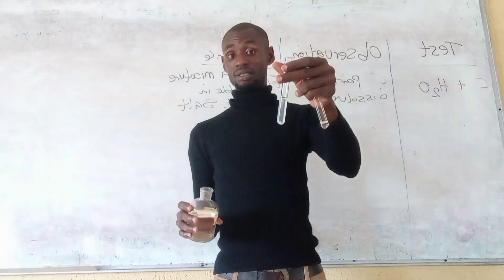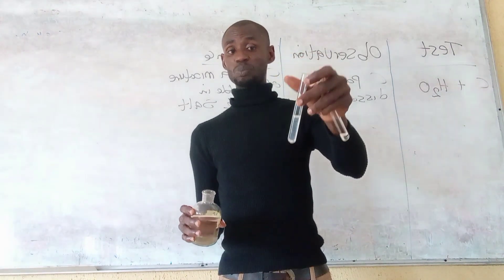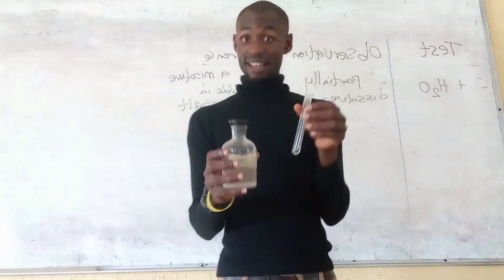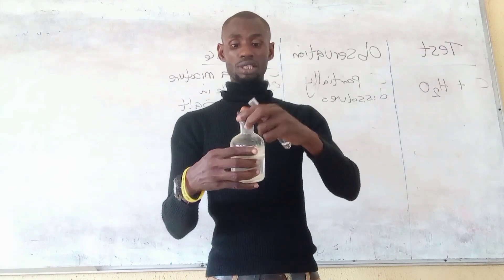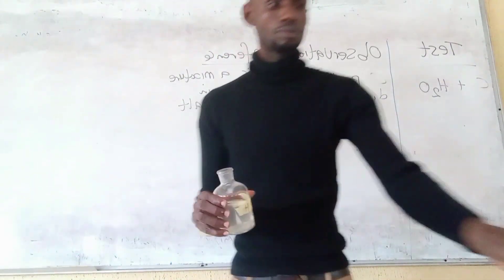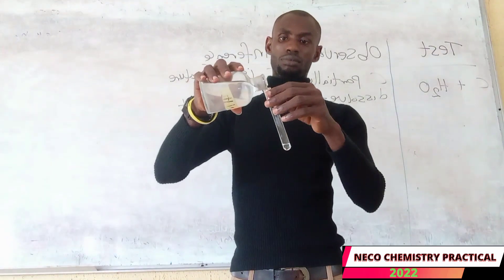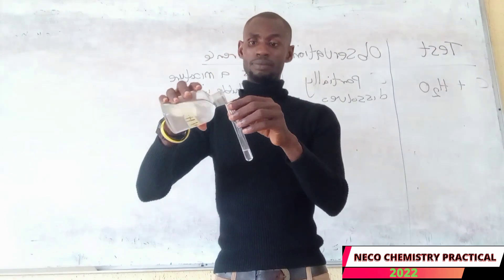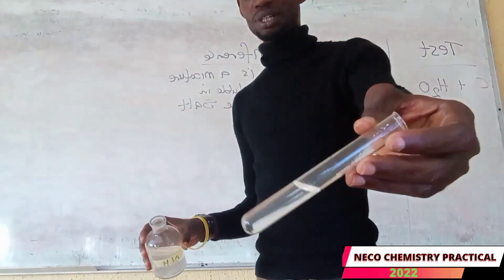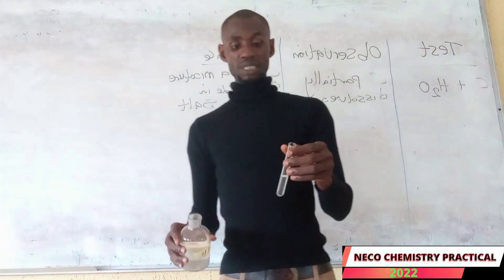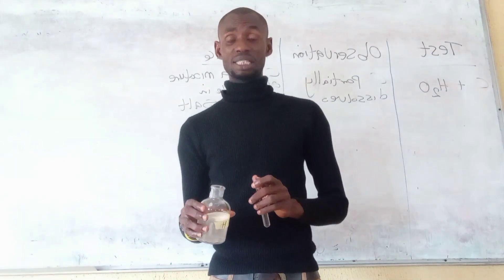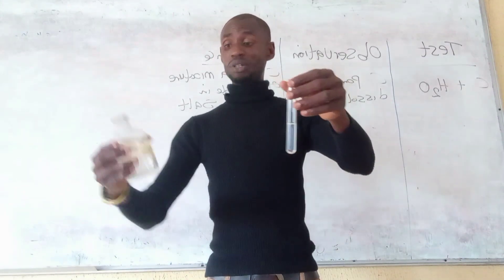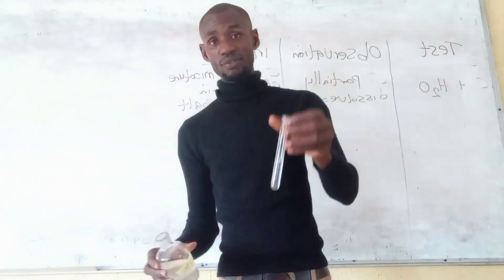A white gelatinous precipitate at the observation stage indicates two suspected ions — supply them in the comment box. To the other portion of the residue I am adding aqueous ammonia. In drops, we observe a white gelatinous precipitate. In excess, the precipitate dissolves. A white gelatinous precipitate that dissolves in excess aqueous ammonia means we are testing for either zinc or aluminium ion — and with aqueous ammonia, we are actually confirming zinc ion.